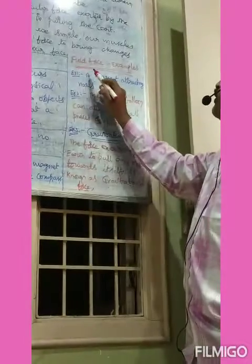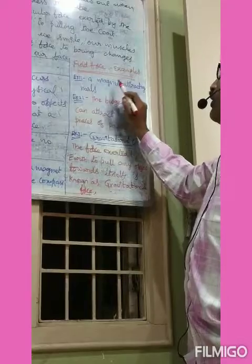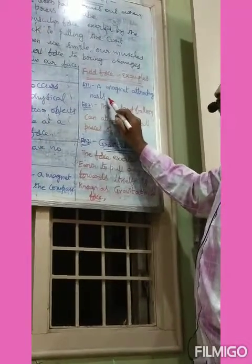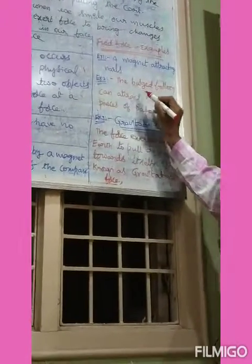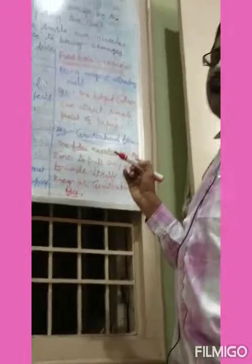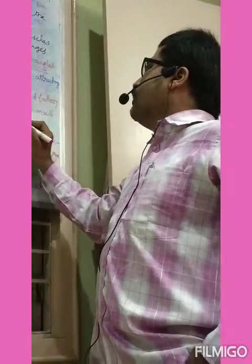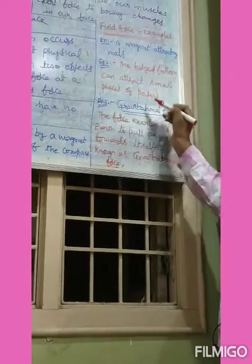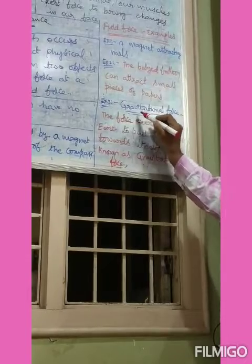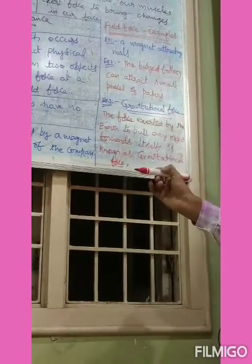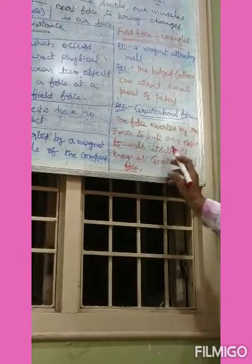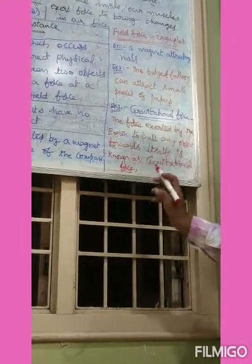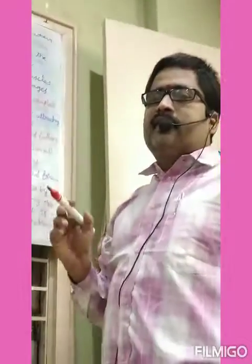Now, examples for field force: a magnet attracting nails is an example of field force. The bulged balloon can attract small pieces of paper — that is an example of field force. Gravitational force is also an example of field force. What is gravitational force? The force exerted by the earth to pull any object towards itself is known as gravitational force.